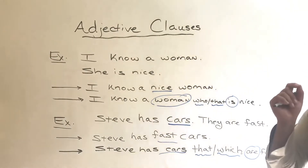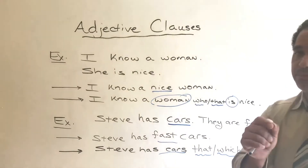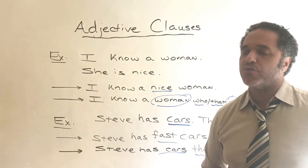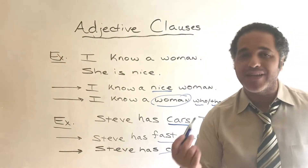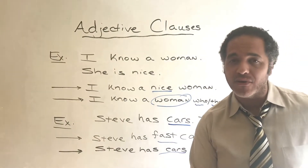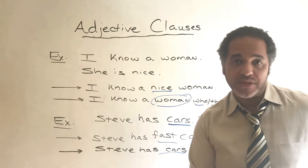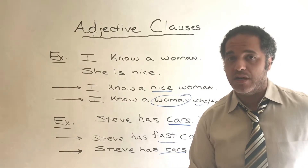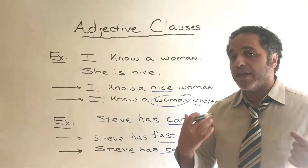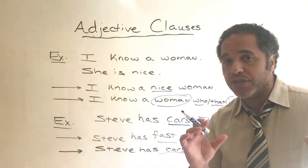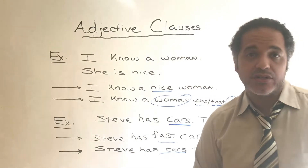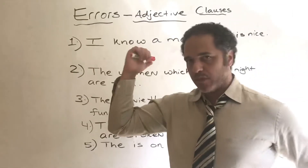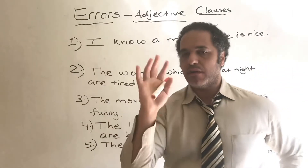Let's look at some more examples. The next examples I'm going to show you are going to be common errors and mistakes that are usually made when an English learner is creating a sentence with an adjective clause.